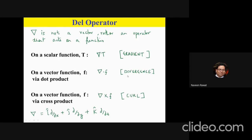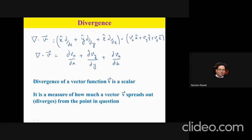The divergence of a vector v is given by the dot product ∇·v. A vector v has components vx, vy, vz. When you take the dot product of the del operator with this vector, only the matching unit-vector dot products survive — x̂·x̂, ŷ·ŷ, ẑ·ẑ equal one, while cross terms like x̂·ŷ are zero because the orthonormal vectors are 90° to each other.